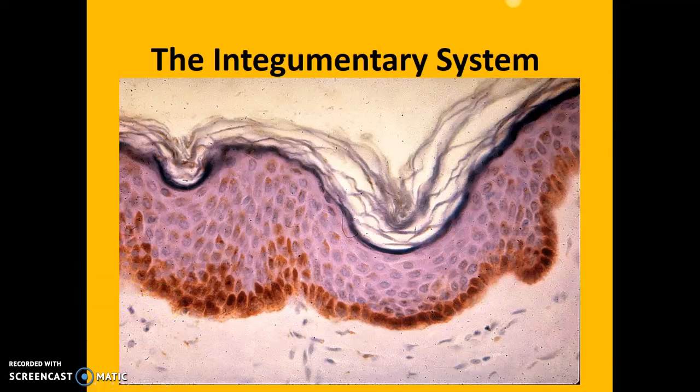The integumentary system, as you can see from the opening slide, at the very top consists of stratified squamous epithelial tissue. The burgundy layer at the bottom is your base layer — the stratum basale — where the cells are constantly dividing, constantly undergoing mitosis. Therefore they are labile cells.